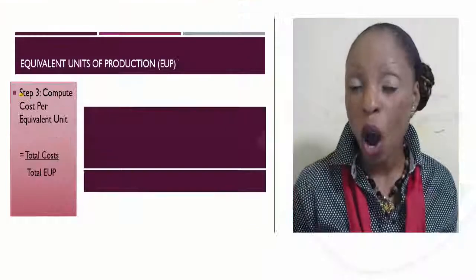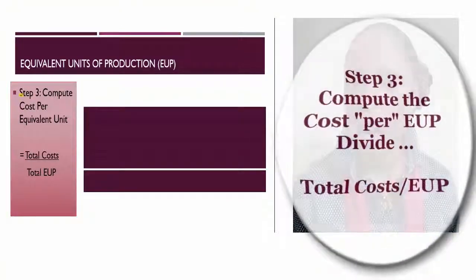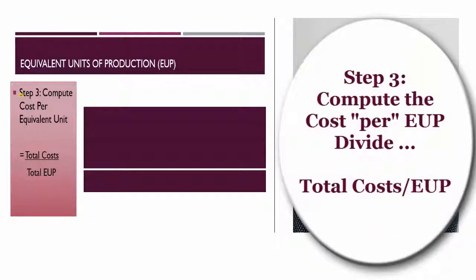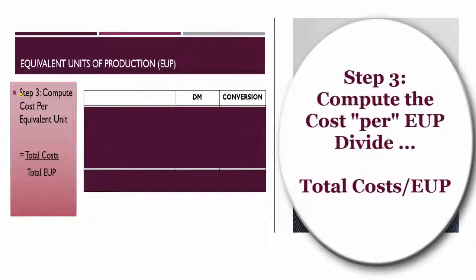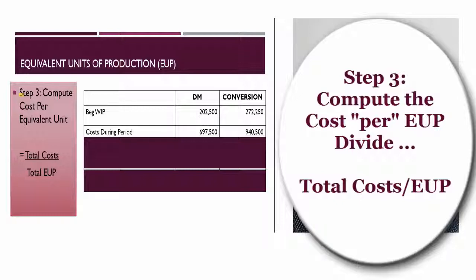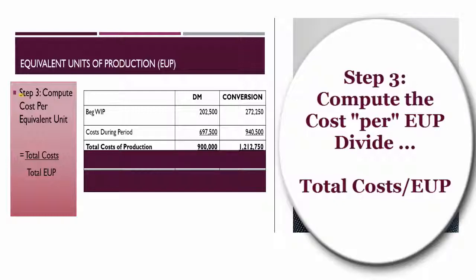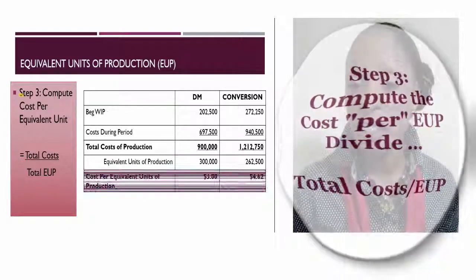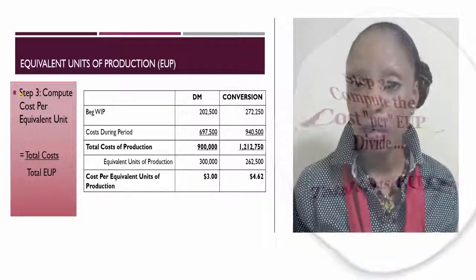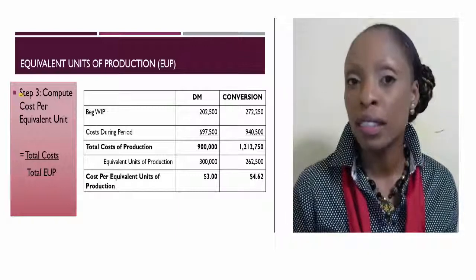With Step 2 completed, we move on to Step 3: cost per equivalent unit. Whenever we say cost per, we are dividing a total cost by some basis — in this case, our total production costs divided by our equivalent units of production. Beginning work-in-process and costs added during the period for direct materials and conversion costs totaled $900,000 and $1,212,750 respectively. Dividing by the equivalent units gives us $3 per equivalent unit for direct materials, and $4.62 per equivalent unit for conversion costs.